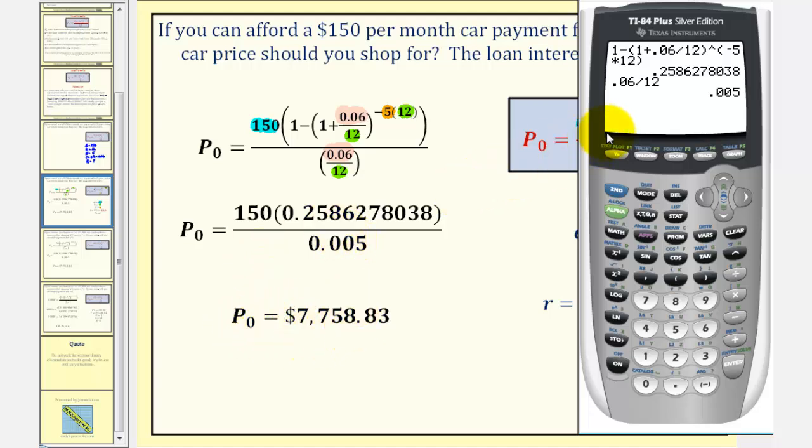So we'll put the numerator in parentheses. So we'll have 150 times this decimal here, 0.2586278038, and then we'll divide this by 0.005. Rounded to the nearest cent, we have $7,758.83.